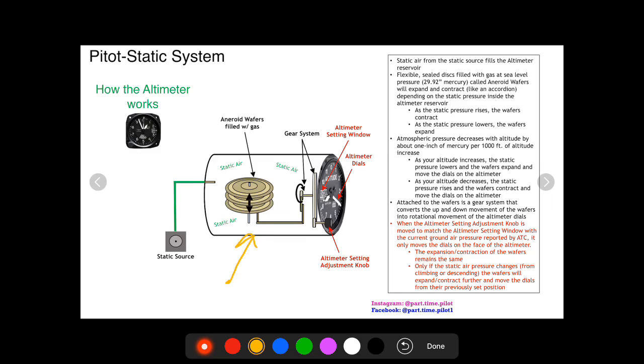Well, this entire system, the wafers, the gears, the knobs, are all assuming a standard temperature. So there's no way for this system to account for a non-standard temperature except for manual inputting of this altimeter setting adjustment knob.